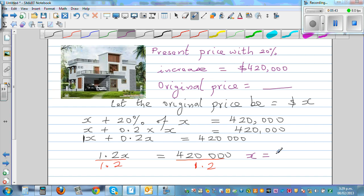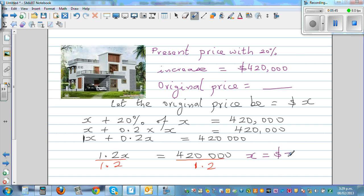It was 350,000, and it has increased by 20%. Let's just check the answer. So 10% is 35,000. So 20% is 70,000. And 350,000 plus 70,000 is 420,000.